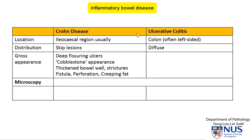In contrast, in ulcerative colitis, the ulcers are more superficial, usually not going beyond the submucosa. And we can also often see numerous pseudopolyps, which can even appear similar to polyposis. This is because of the regenerating areas of mucosa in between the ulcerated areas.